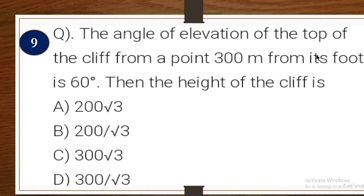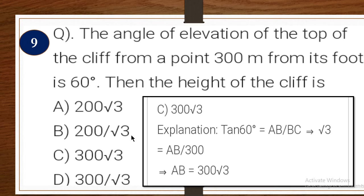Next one: the angle of elevation of the top of a cliff from a point 300 meters from its base is 60 degrees. Find the height of the cliff. Explanation: tan 60° = opposite/adjacent = AB/BC = √3, so AB = 300 × √3. The correct answer is C, which is 300√3 meters.